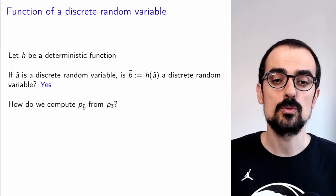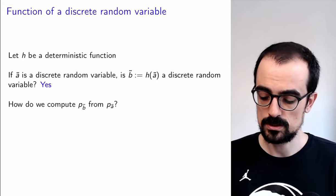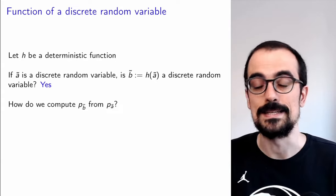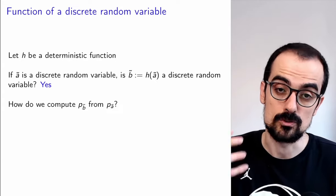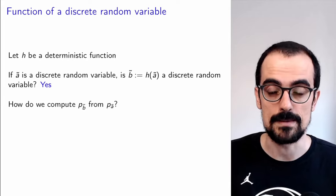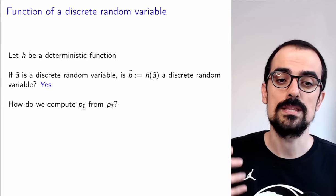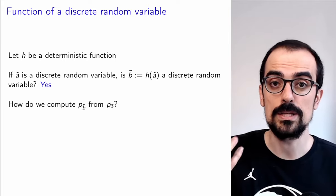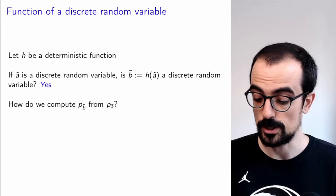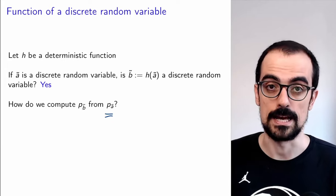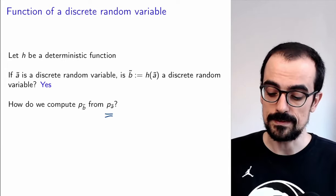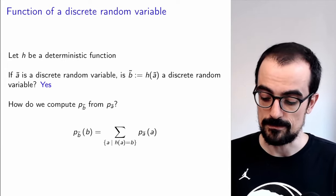We justified this in the video on discrete random variables and the probability mass function. So how do we compute the PMF of B? Because remember that we describe discrete random variables using their PMF. How do we derive the PMF of B if we already know the PMF of A? Well, basically we go to the definition of the PMF of B.